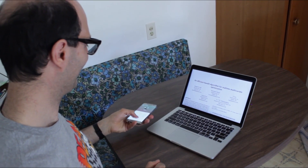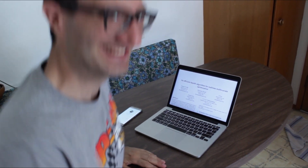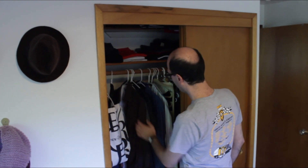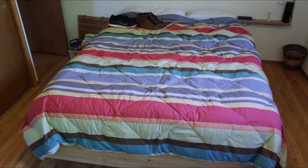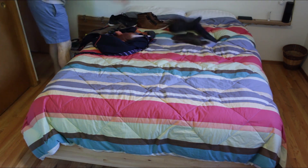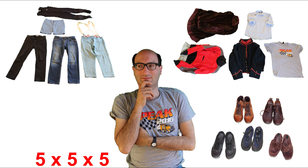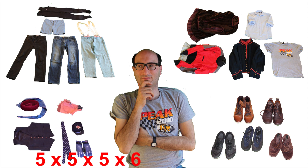Let's consider this fellow. He wants to look his best, but what will he wear? Selecting an outfit is an example of a multivariate optimization problem. He owns 5 pants, 5 pairs of shoes, 5 shirts, and 6 accessories, for a total of 750 possible outfits to choose from.